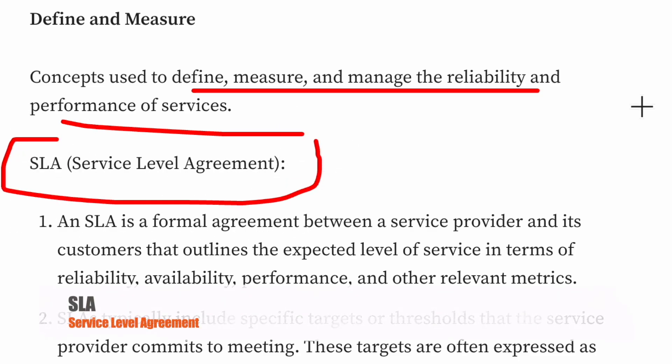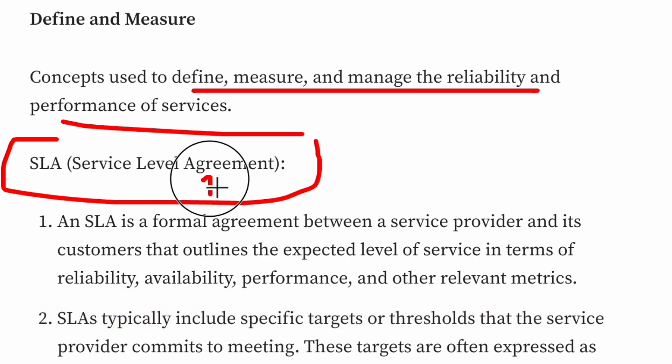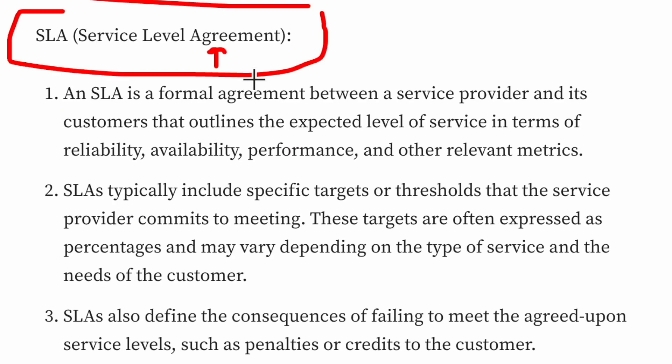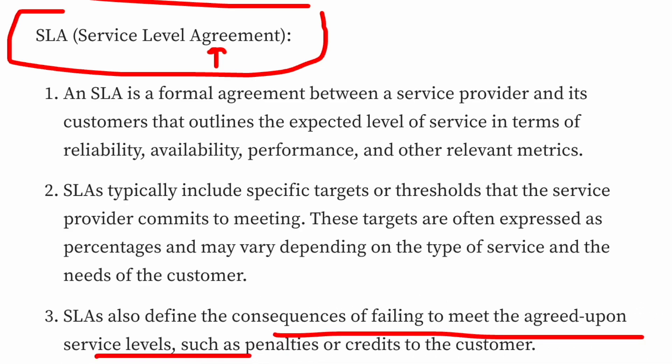A Service Level Agreement (SLA) is a legally binding agreement between a service provider and the customer. For example, if you have an account with a brokerage firm for stock trading and the site is always down, that would be a problem. So the SLA defines that the uptime of the system should be 99.9%. An SLA is a formal agreement that outlines the expected level of service in terms of reliability, availability, performance and other relevant metrics. SLAs also define the consequences of failing to meet the agreed service level — for example, penalties for the vendor.